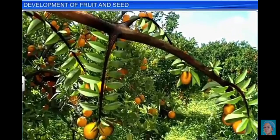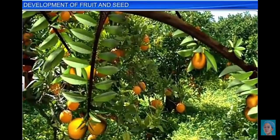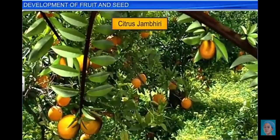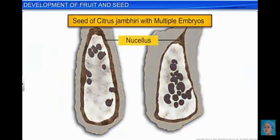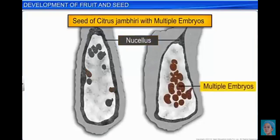Moreover, in certain apomicts such as Citrus jambiri, which belongs to the Rutaceae family, the nucellar cells surrounding the embryo sac divide and protrude into the embryo sac. Later, these cells develop into embryos, and hence a single seed contains more than one embryo.